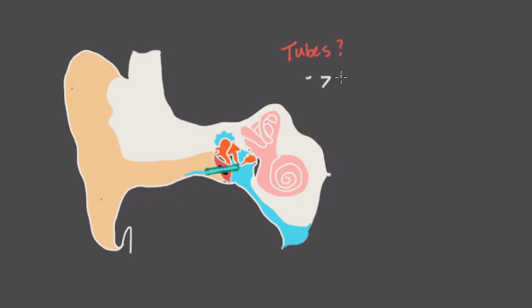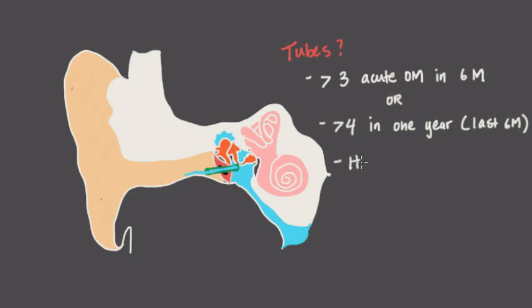The current recommendation to consider this is when you have three episodes of acute otitis media in six months, or four episodes in one year, including one in the preceding six months. So you can see from these guidelines why accurate diagnosis of real acute otitis media is important. Otherwise, if we over call it, the patient can qualify for tubes without truly needing them. And aside from these numbers, tubes are also considered when there are symptoms like hearing loss from chronic fluid effusions.